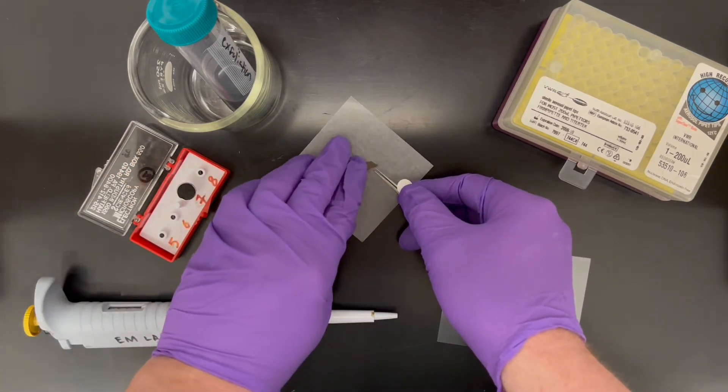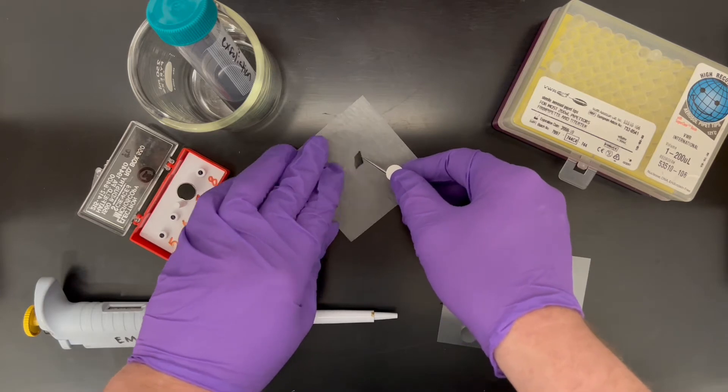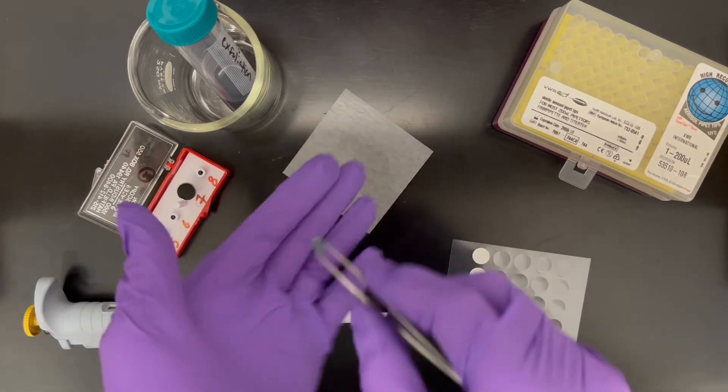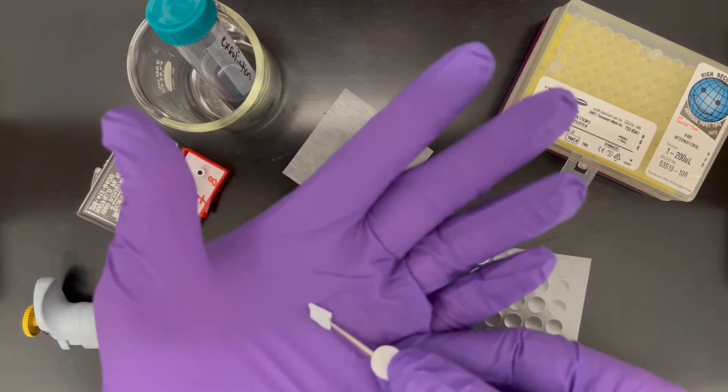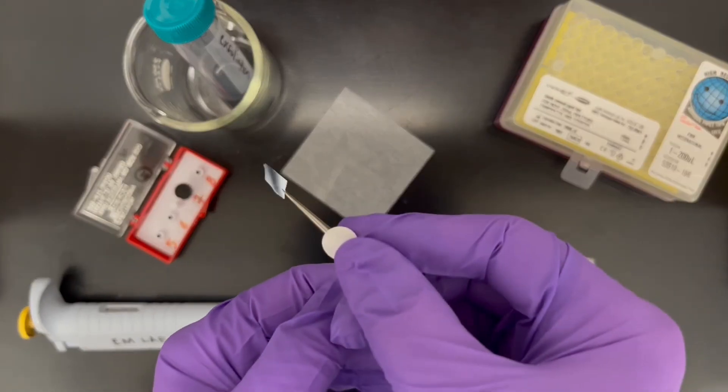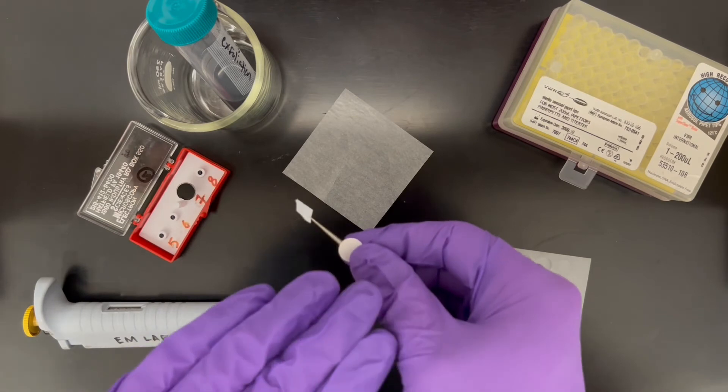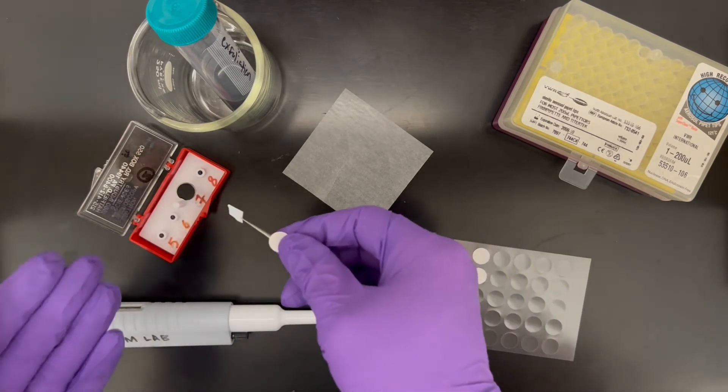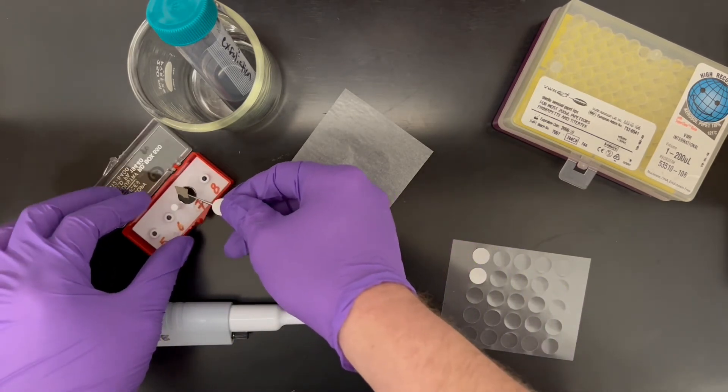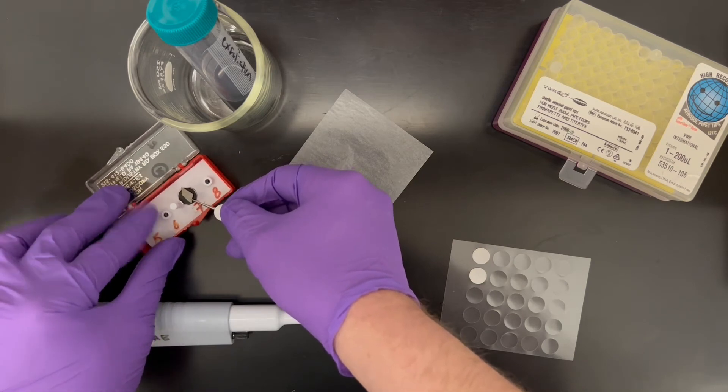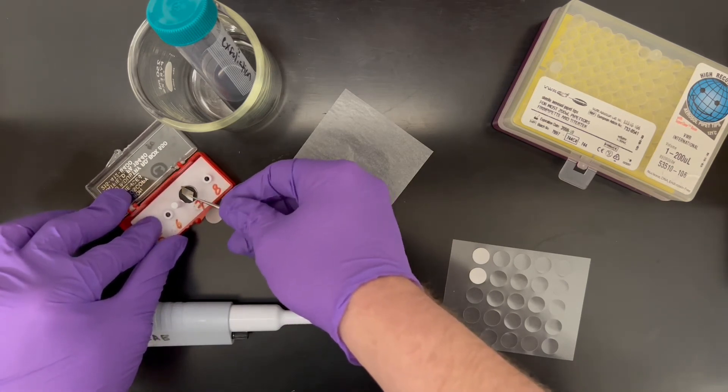Then we'll take our silicon wafer and make sure it's shiny side up. That's to make sure that the flattest side is the side we're imaging on. Press it into the pad.